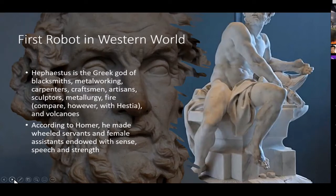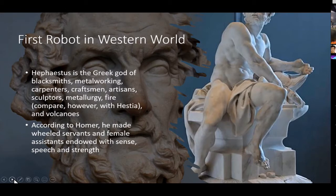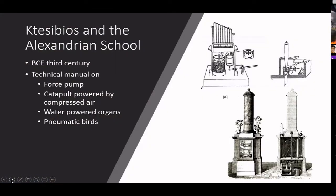Although we talk about robots, the term robot is relatively new — we'll see that later in the lecture. The first reference to automated objects with self-moving parts goes back to Greek mythology. According to Greek mythology, Hephaestus, the Greek god of blacksmiths and metalworking — very similar to the Hindu god Vishwakarma — was described by Homer, known for the Iliad and Odyssey, as having made wheeled servants and female assistants for the gods: automated androids for guarding, endowed with speech and strength.